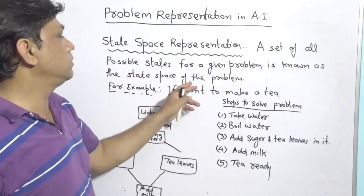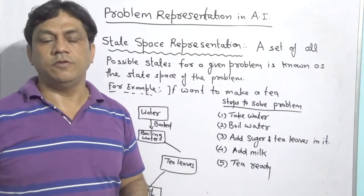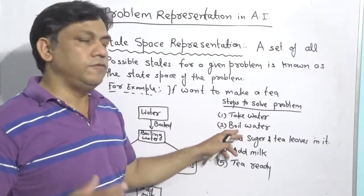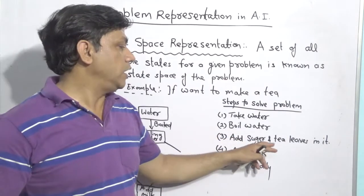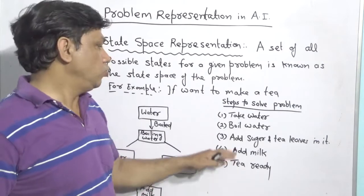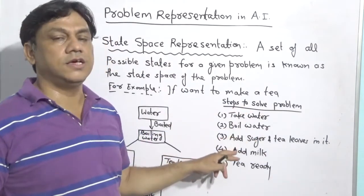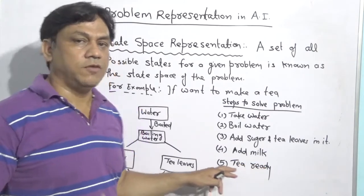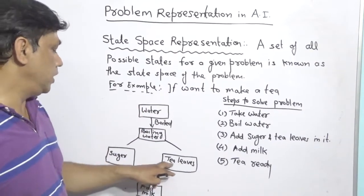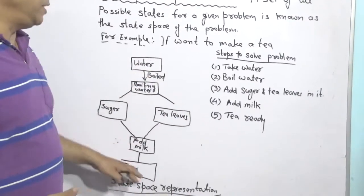For example, if I want to make tea, this is a problem we want to solve using AI technique. The steps are: take water, boil the water, add sugar and tea leaves, add milk, and then the tea is ready to serve. These five steps are the different states, known as state space. If you want to show this diagrammatically in state space: water → boil → add sugar and tea leaves → add milk → tea is ready. This is the diagrammatic state space representation.